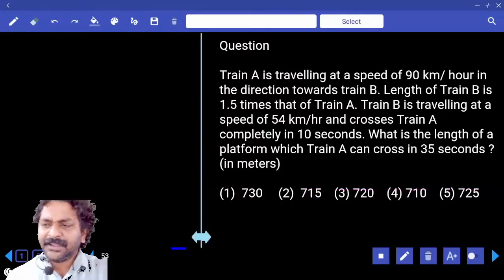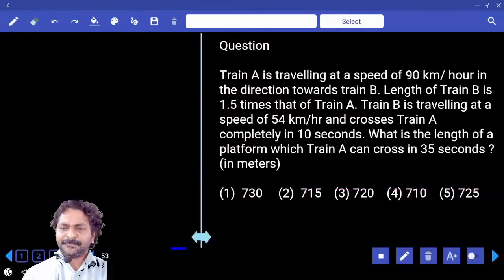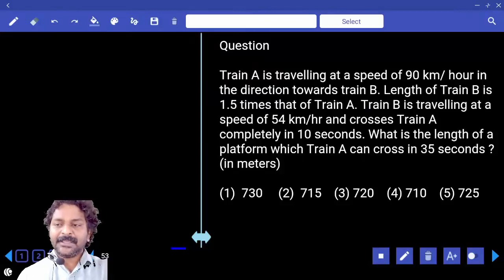Train A traveling at a speed of 90 km per hour in the direction towards train B. The length of train B is one and a half times that of train A. Train B is traveling at a speed of 54 km per hour and crosses train A completely in 10 seconds.